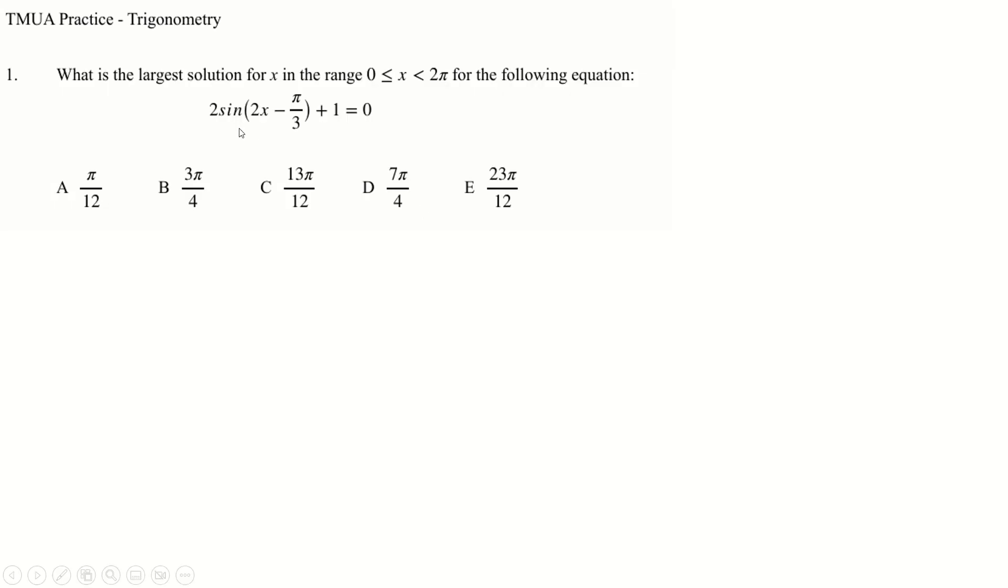First one is going to say, what's the largest solution for x for this equation? We'll obviously take away 1 divided by 2, and then we'll do sine inverse of minus 1 half. Now, we need to think about the range carefully here, because if we double this and then take away π over 3 from both, we'll end up with this.